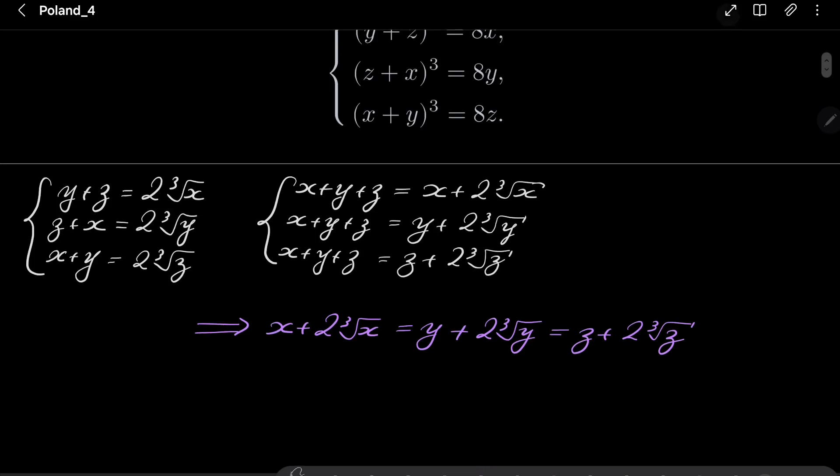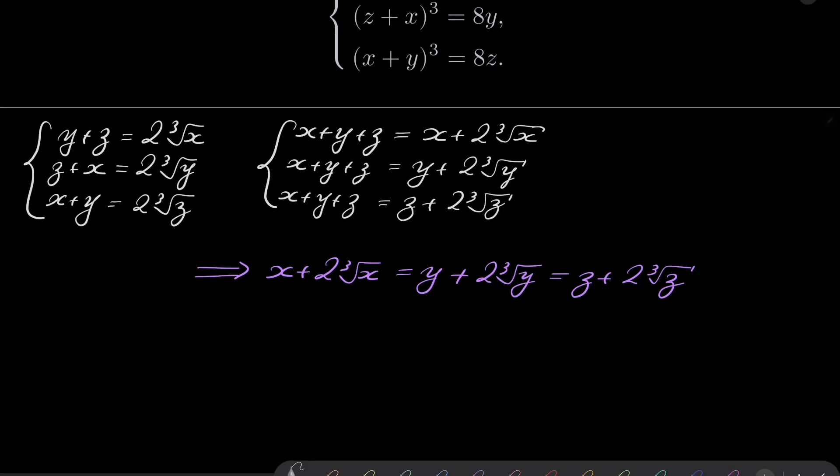But now let's also notice that the function which takes real number t and maps it to t + 2∛t, this function is strictly increasing.